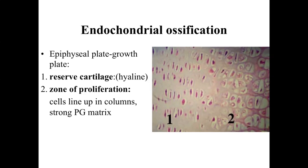We want to maintain cartilage on the articular surfaces of these bones at the joint cavity, so we don't want to convert all of the cartilage into bone. At the highest portion of the epiphyseal growth plate, closest to the joint cavity and articular cartilage, we have reserve cartilage. Reserve cartilage looks like generic hyaline cartilage and essentially protects our articular cartilage.